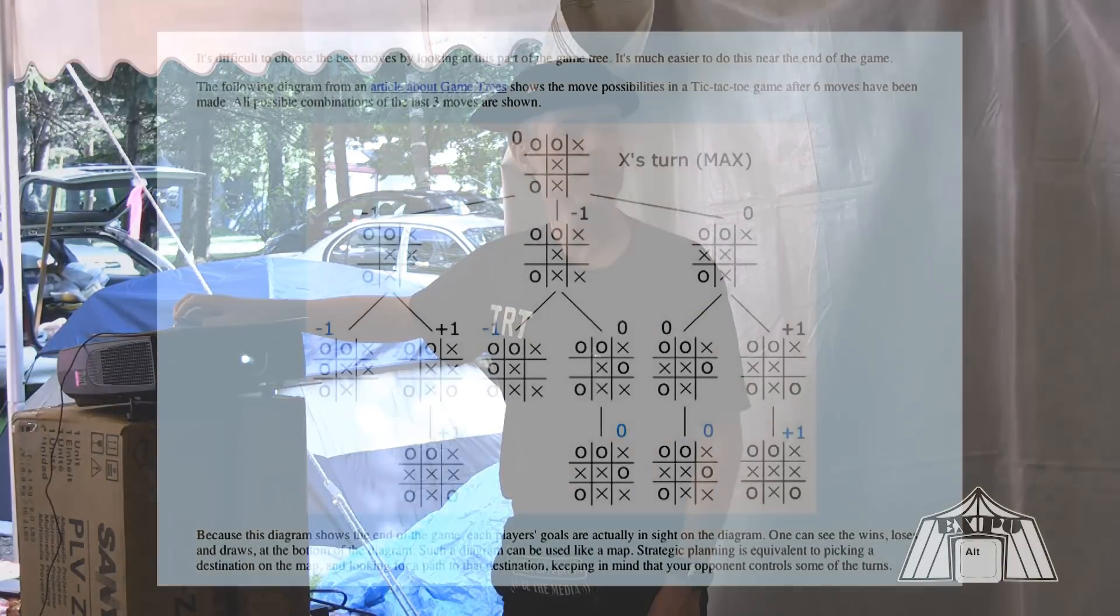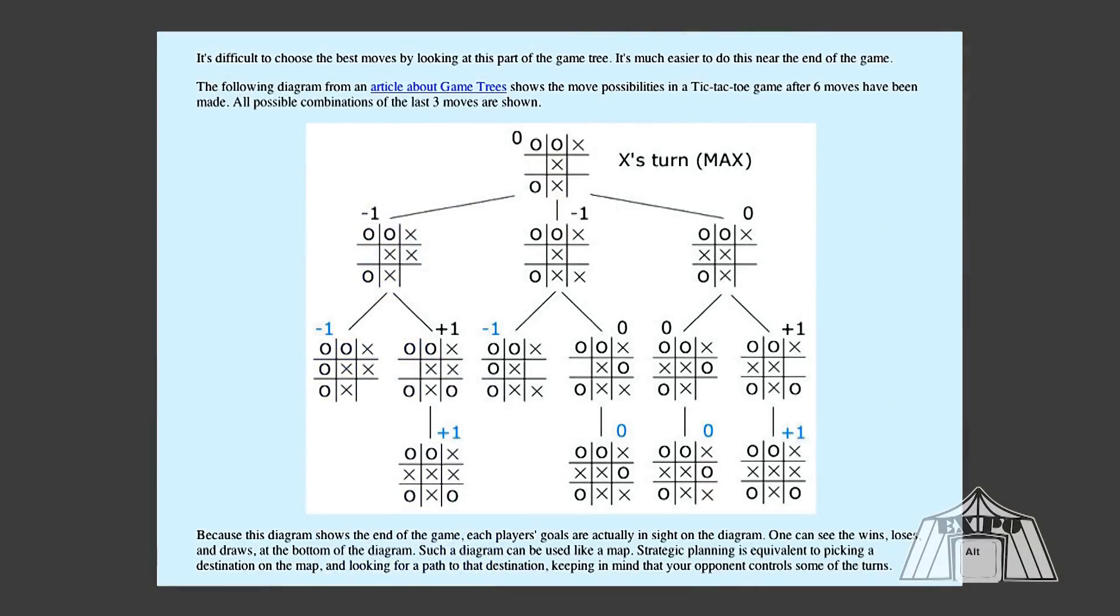This diagram here shows all the options available in the tic-tac-toe move tree, but right near the very end of the game, after six moves have been made, six particular moves. This is the state of the game at this point. We have three options for player x, and for each of those options, we have various options for player o. And then after o makes his moves, then we have the options for player x again. All these terminal squares here, or these game lattices, show actual ends of games.